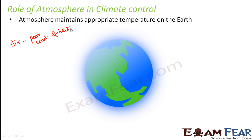So how is this property of air utilized? During the daytime, the heat and light of the sun reach the earth. Due to the presence of the atmosphere, which is a bad conductor of heat, it prevents excess heat from entering the earth and prevents excess increase in temperature. So obviously some heat does enter, which is why days are hot, but not extremely hot.